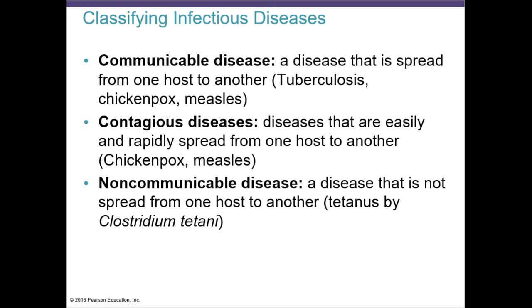A contagious disease is one that spreads rapidly — chicken pox and measles are examples. A non-communicable disease, the best example is tetanus, which is a disease that is not contagious and is not spreading from one host to the other.